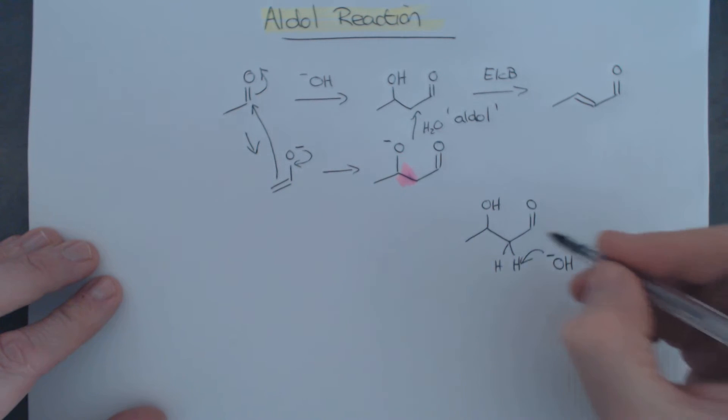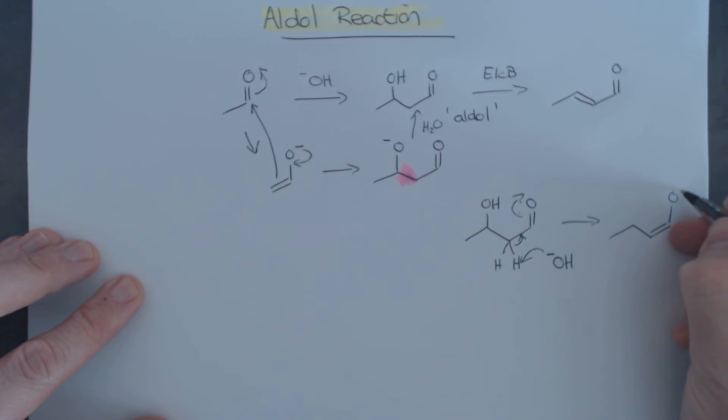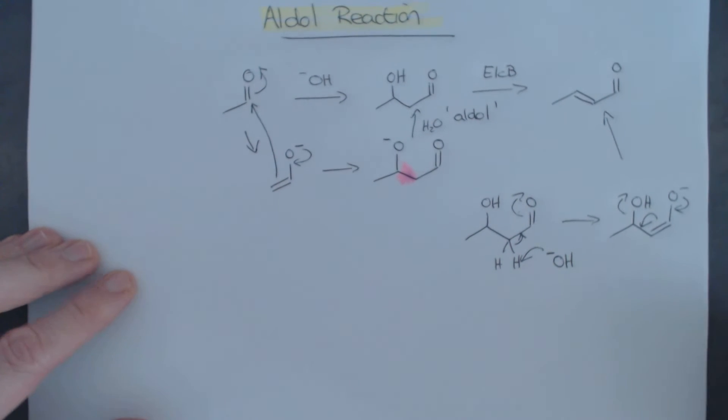So what's more likely to happen is the base, when it reacts with that, is more likely to actually just delocalize into the carbonyl. And so when that occurs, we get the enolate being regenerated, like that. And this system is a little bit more stable, but this system can now collapse and kick out this unfavorable leaving group, which is the hydroxide. And that leads to our unsaturated aldehyde in that respect over there.